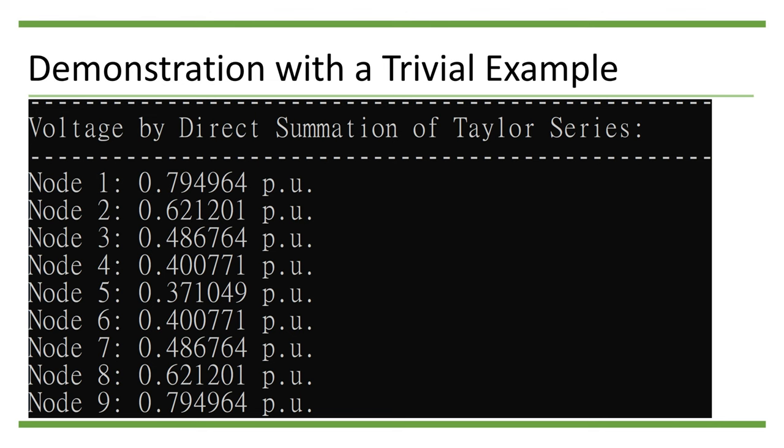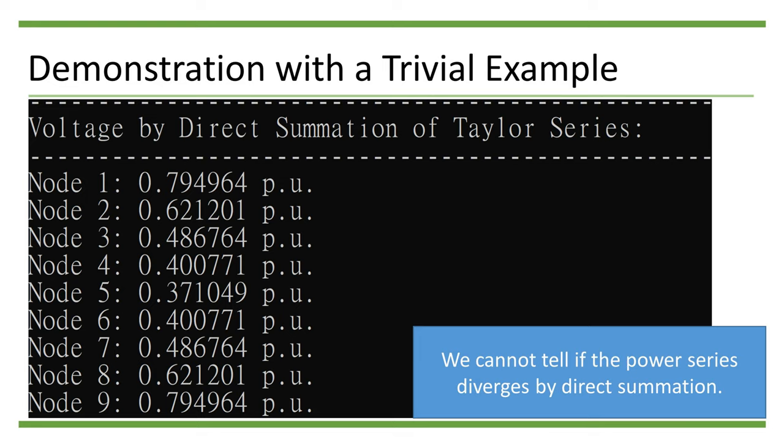In the first part of the output, we can see the resulting voltage by directly summing up all the coefficients of the power series. It is difficult to tell whether or not the series diverges with this result.